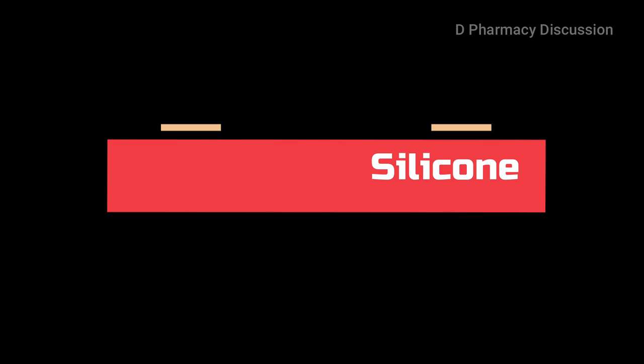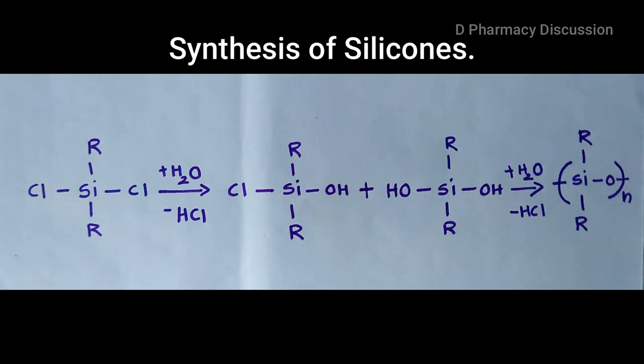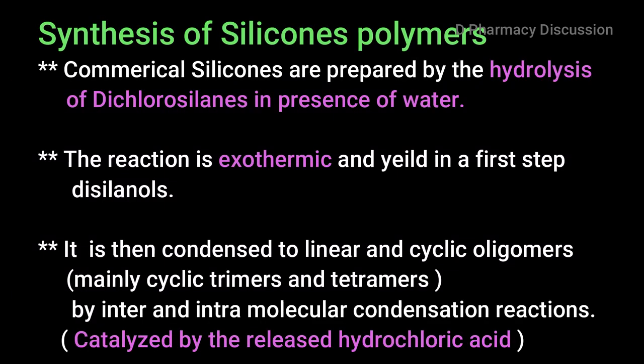The synthesis of silicones: the chemical reaction is as shown. Commercial silicones are prepared by the hydrolysis of dichlorosilanes in the presence of water. The reaction is exothermic and yields, in the first step, disillanols, which are then condensed to cyclic oligomers — mainly cyclic trimers and tetramers — by inter- and intramolecular condensation reaction, catalyzed by the released hydrochloric acid.